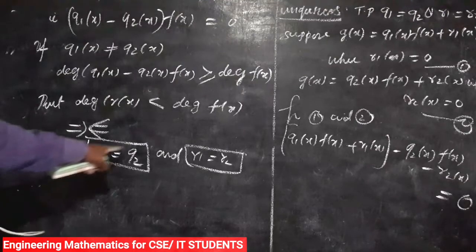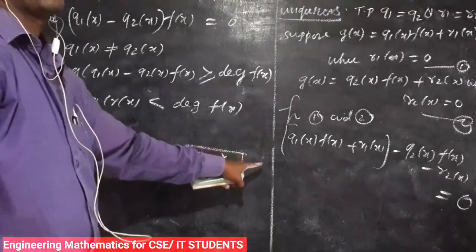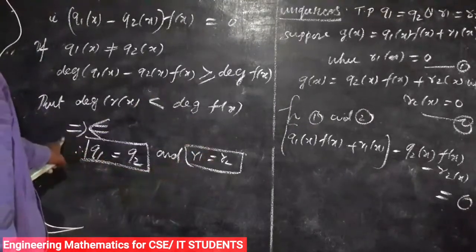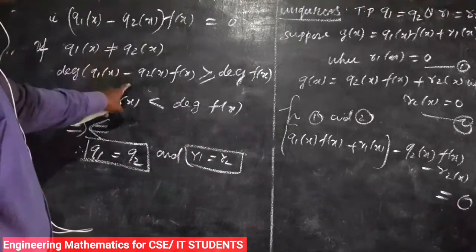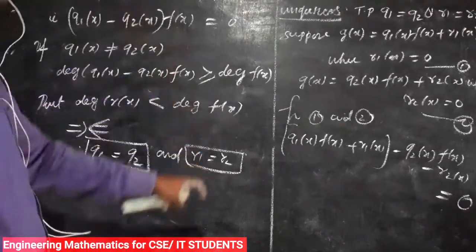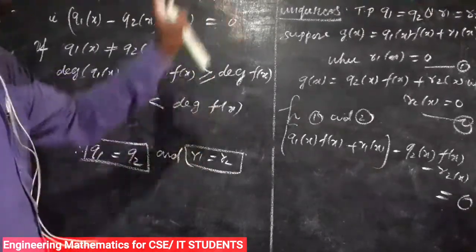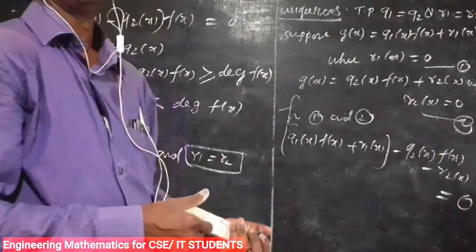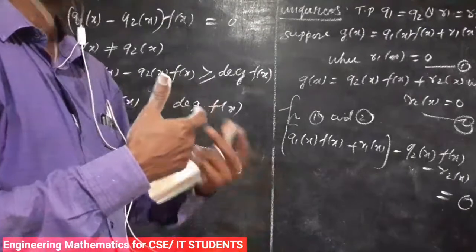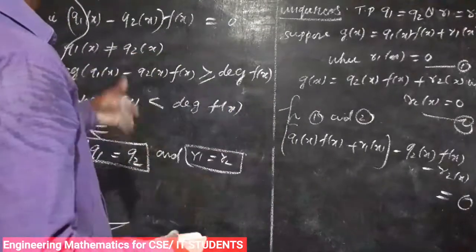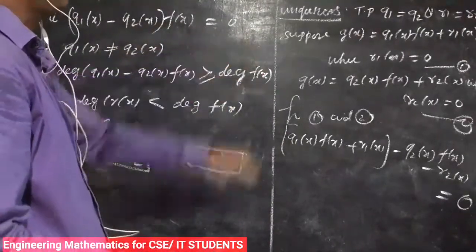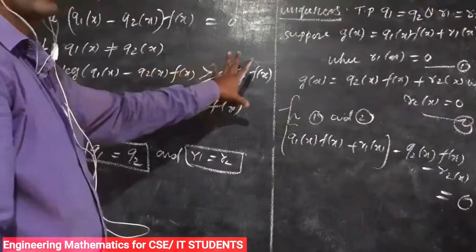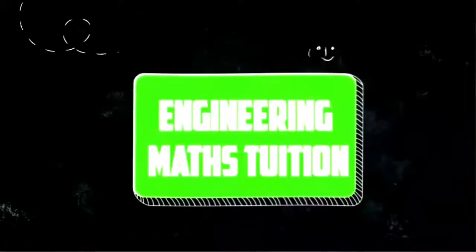Therefore, there exist unique polynomials q(x) and r(x) such that g(x) equals q(x) times f(x) plus r(x), where r(x) equals 0 or degree of r(x) is less than degree of f(x). If you have any doubts, please mention them in the comments box. In the next video, we will explain this in more detail and do counter-examples. Thank you.